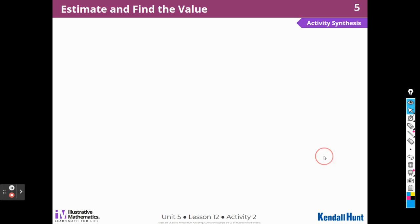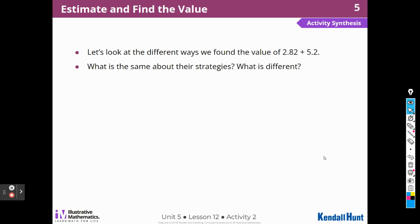Let's move on to the synthesis. Let's take a look at different ways we found 2.82 plus 5.2. What is the same about our strategies and what is different? Well, it depends on in your class what strategies you used. But for me, I always lined up my decimal points. If I needed to compose new units, I added them on to the top, just like I do in a standard algorithm. The estimate helped me with my calculation because it was really close to the answers. Both of those were very close to the answers.